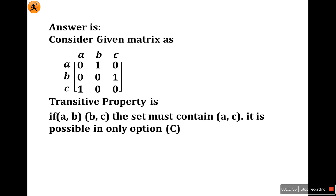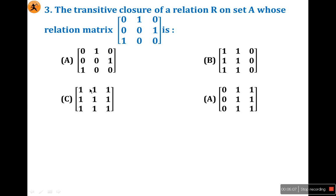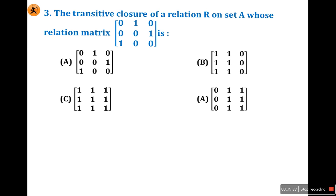Transitive property means: if there is a relation from a to b, and a relation from b to c, then the set must contain a relation from a to c. Looking at the options, only option C satisfies this. In option C, wherever a relates to b and b relates to c, there is a corresponding relation from a to c. So the answer is C.